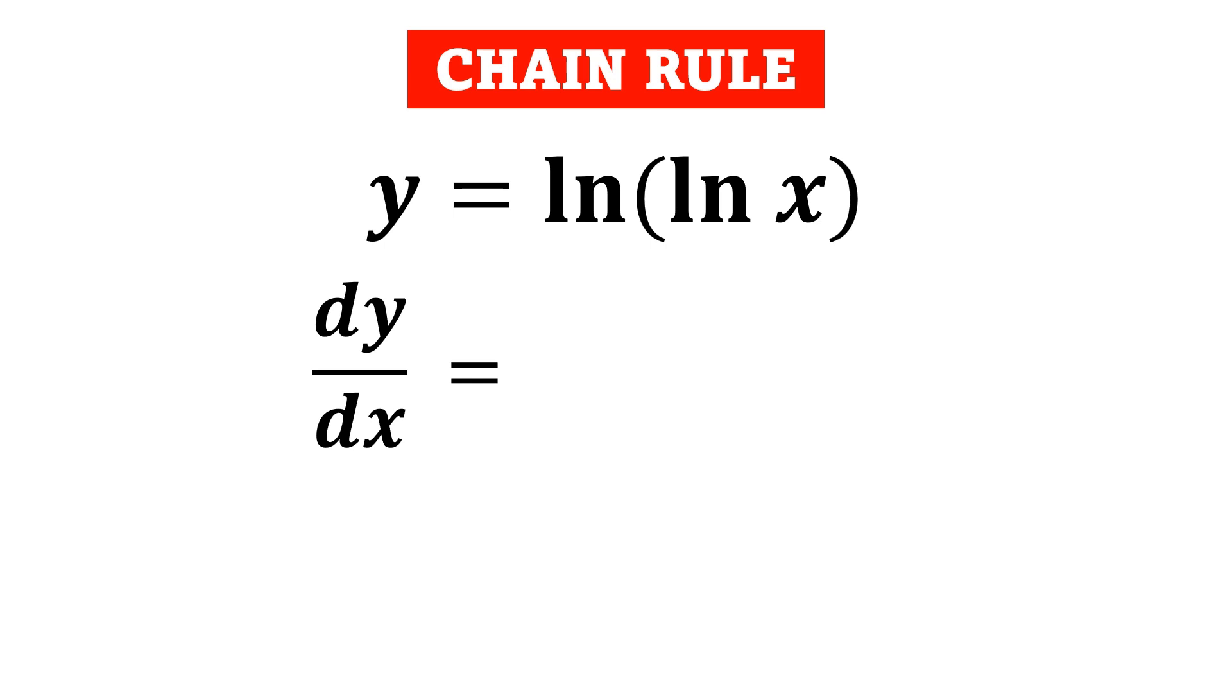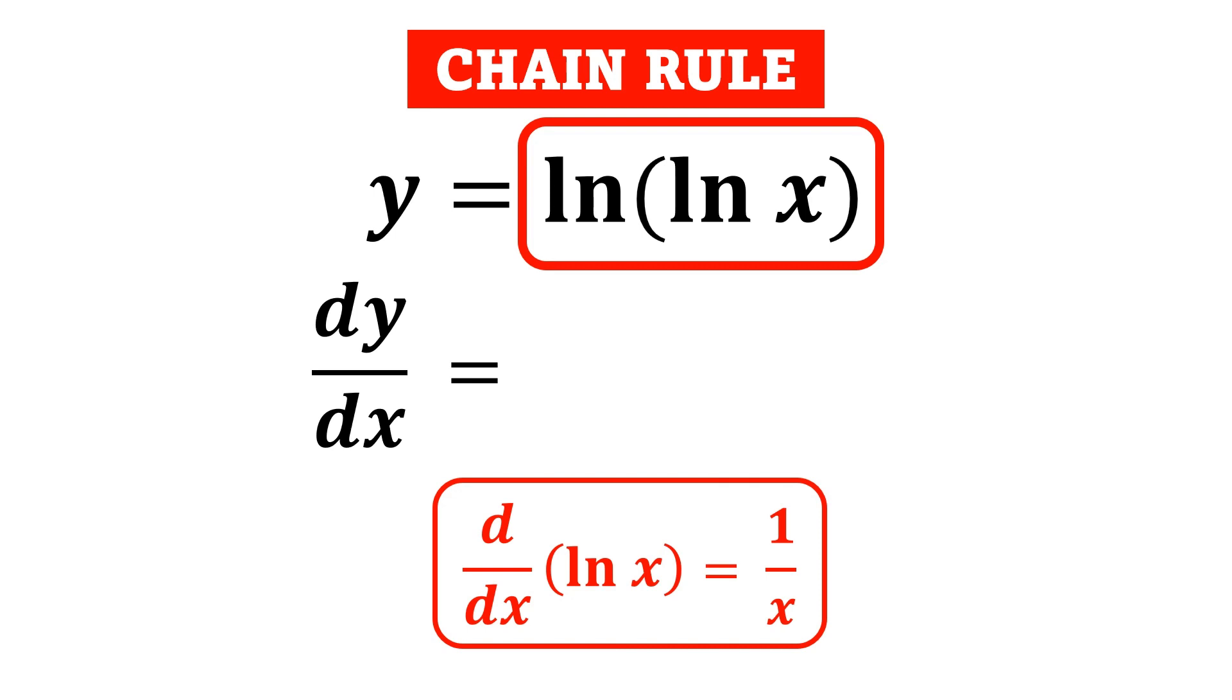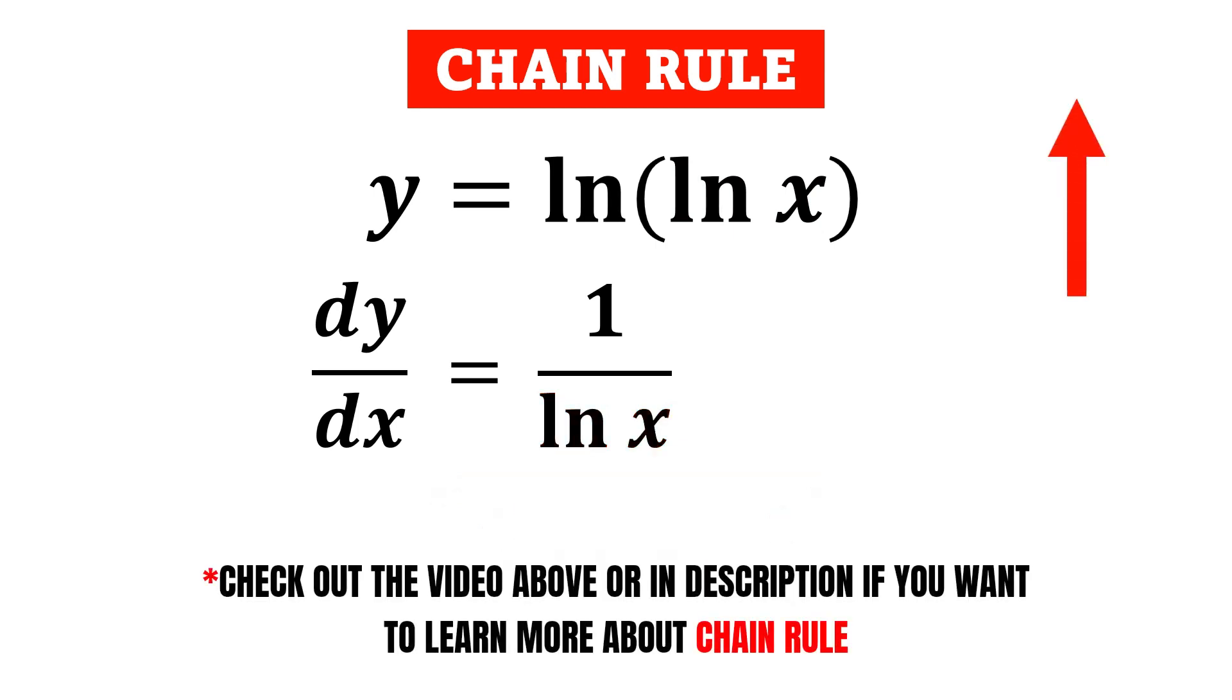By applying the chain rule, we first take the derivative of this whole thing. As we know, the derivative of ln x is 1 over x. So in this case, we will be getting 1 over ln x. You may check out the video above or in description if you wanted to learn more about the chain rule.